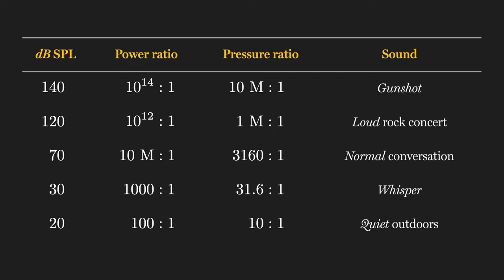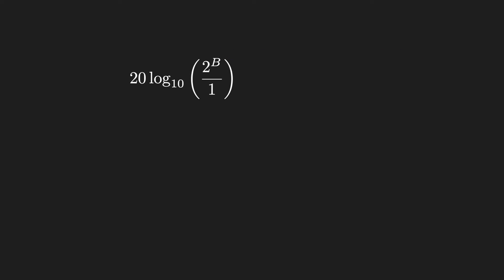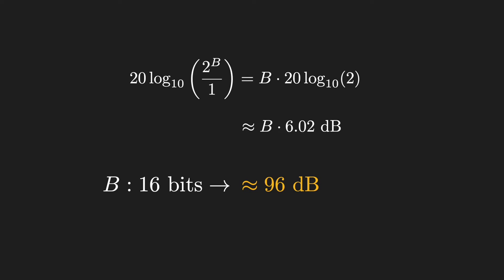So what does this have to do with bits and quantization? Well, each additional bit doubles our amplitude range, adding about 6 dB of dynamic range. So 16 bits gives us about 96 dB of dynamic range. Is that good? Well, let's return to the map of human hearing.